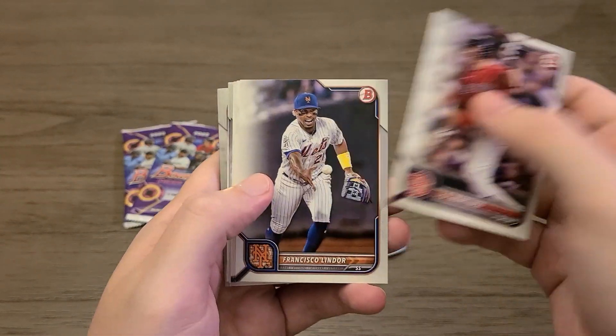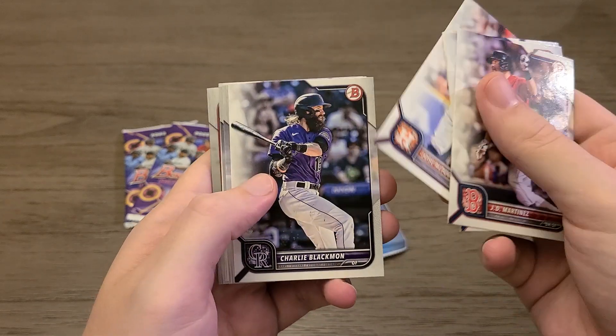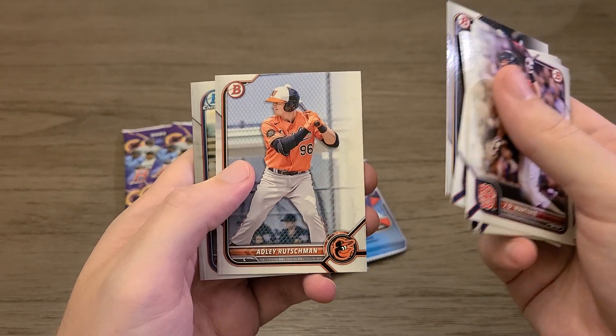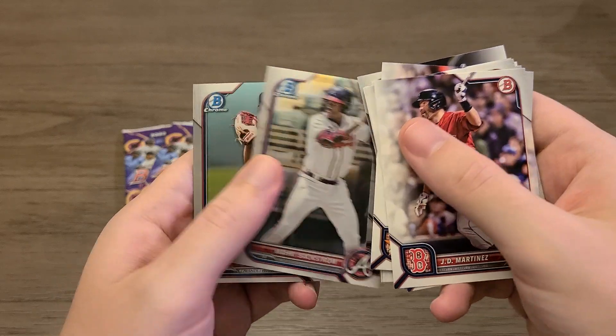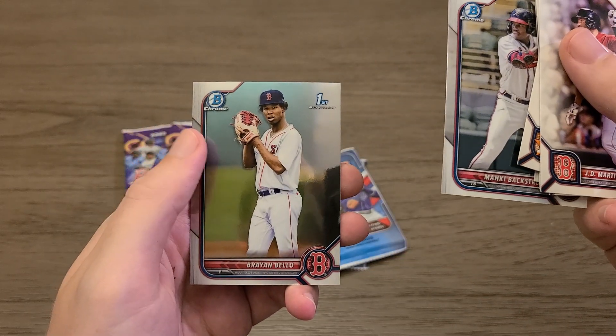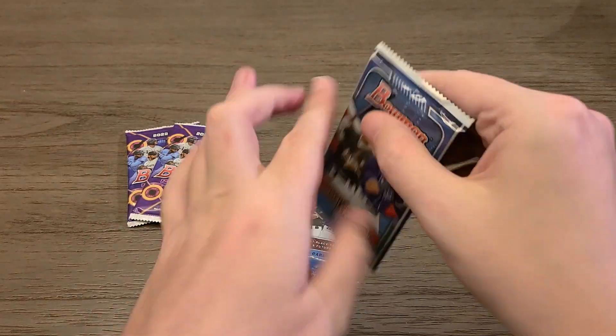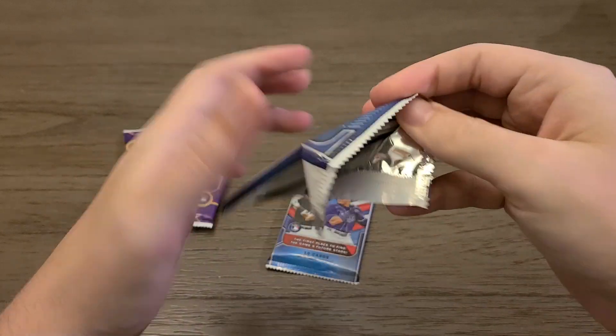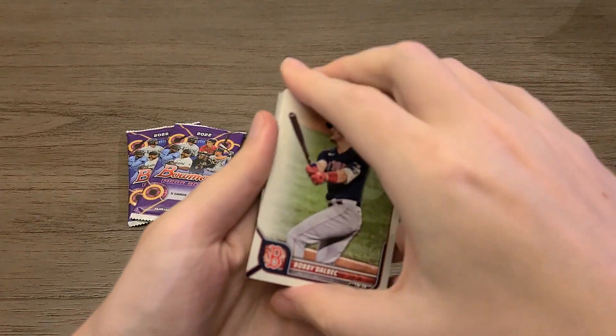Jaime Martinez, Francisco Lindor, Joey Gallo, Altuve, Blackmon, Hedrick Perez, Adley Rutschman and Makai Backstrom and Brayan Bello are the two chrome. I think Brayan Bello, he might be up in the pros by now. His name is familiar so I think he's been called up. Someone in the comments can correct me if I'm wrong.